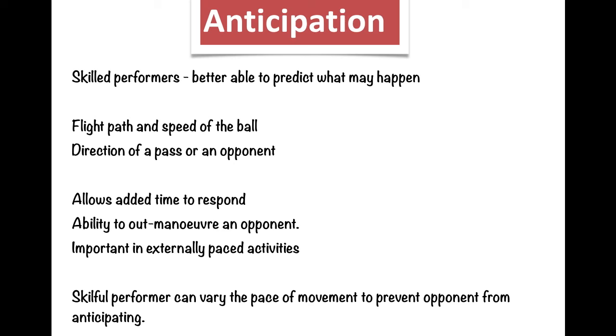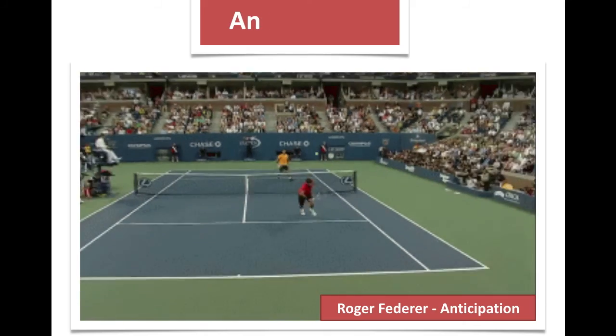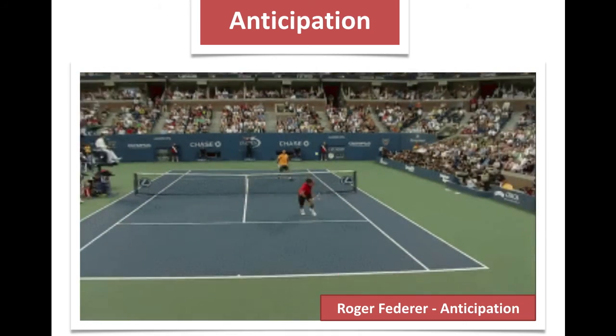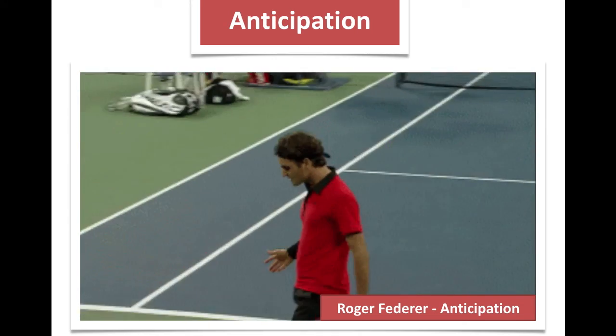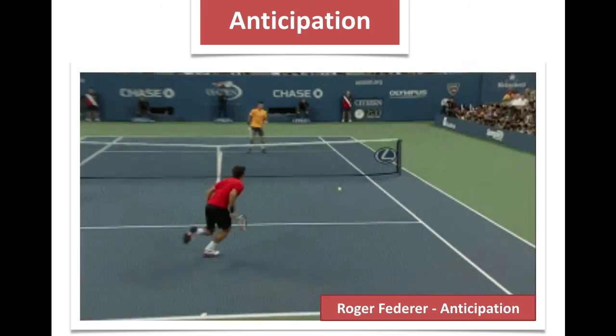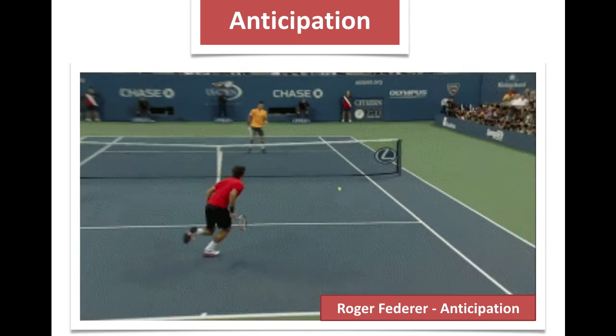A skillful performer can also vary the pace of the movement to prevent an opponent from anticipating. Skillful athletes need to be able to combat the fact that the person on the other side of the net, for example in tennis, can anticipate their movement. A great example here is this little clip of Roger Federer, able to anticipate, firstly, that the ball is going to be dropped short, and then to turn around and anticipate that the ball will be put over his head and get it back through the legs. A high quality, highly skilled athlete, anticipating and able to get to the ball faster and respond.